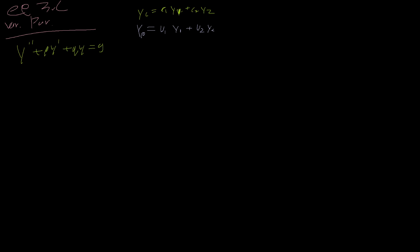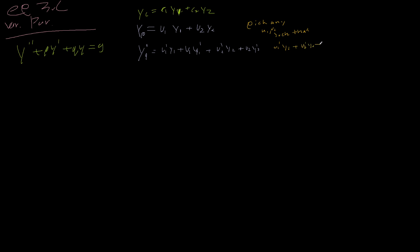The next thing we want to do is take the first derivative, and we can apply the product rule here. We get u1'·y1 plus u1·y1' plus u2'·y2 plus u2·y2'. Since we can pick whatever u we want, we're going to pick u1 and u2 such that u1'·y1 plus u2'·y2 equals zero.